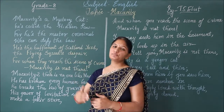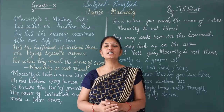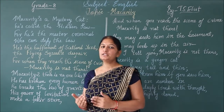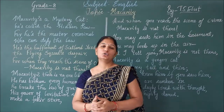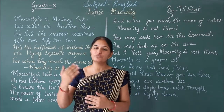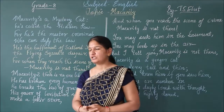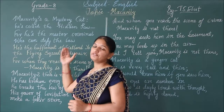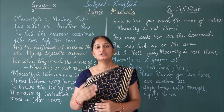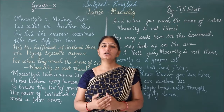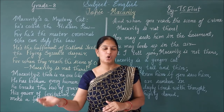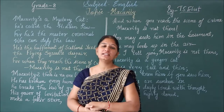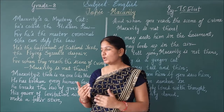Here McCavity is personified — he does all the things like a human being. McCavity is a mystery cat and he is called the Hidden Paw, which is the name given to this mystery cat. For he is a master criminal who can defy the law, and he commits the crime in such a way that he can even misguide and confuse the law. That's why he is called a mystery cat — he is very mysterious.